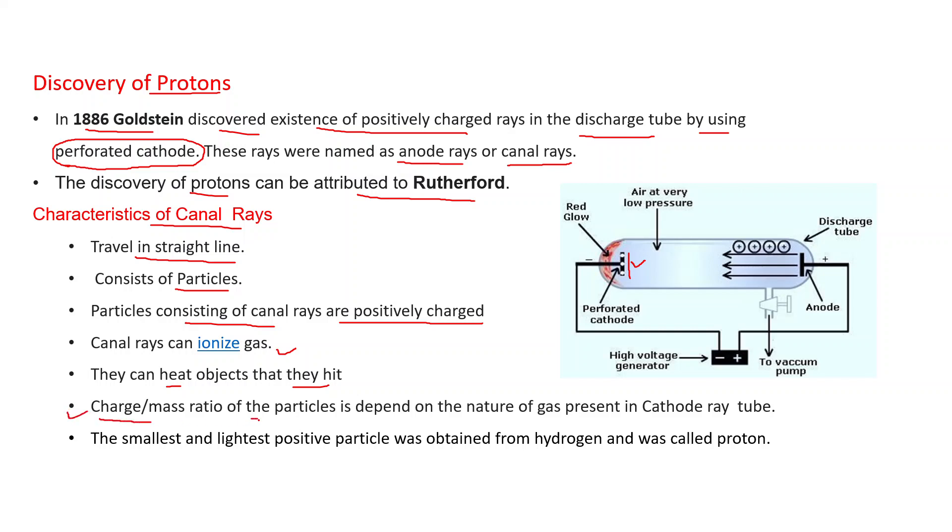And this is most important. Charge to mass ratio of the particles is depending on the nature of gas present in cathode ray tube. And if hydrogen gas is taken in the tube, then this charge to mass ratio is minimum. What will be the condition then it may be minimum? Either charge is maximum or mass is minimum. Experiment says that its mass is minimum. We can say when hydrogen gas is taken, we get the smallest particle. The smallest and lightest positive particle was obtained from hydrogen and that particle was called proton.